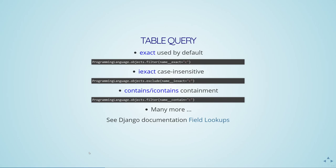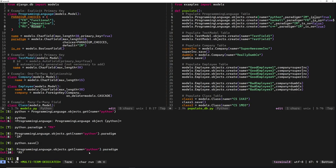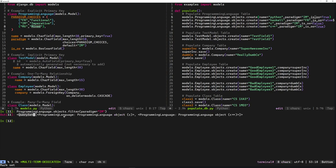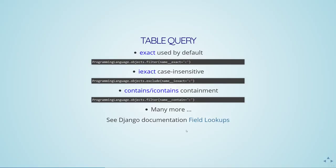Last time we went over querying, and I showed you how to use filter and exclude besides just get. Filter and exclude let you query by attribute and return a QuerySet — a list of all entries matching what you're looking for. For example, ProgrammingLanguage.objects.filter(paradigm='IM') returns all programming languages with the imperative paradigm.